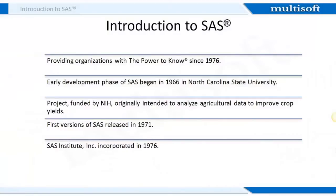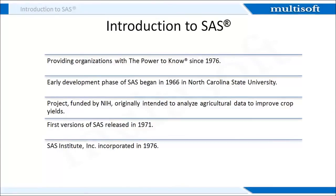The early development phase of SaaS began in 1966 at North Carolina State University by Anthony Barr. Barr programmed his analysis of variance and regression software so that it would run on IBM 360 computers. This project was funded by the NIH and was originally intended to analyze agricultural data to improve crop yields. Barr was later joined by student James Goodnight, who developed the software's statistical routines, and these two became the project leaders.